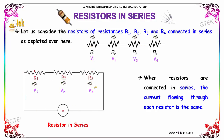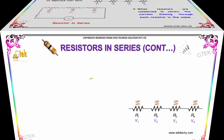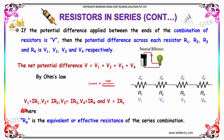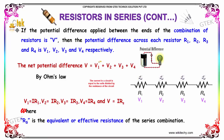When resistors are connected in series, the current flowing through each resistor is the same. Whereas the voltage will be different, which is considered as V1, V2, V3, and V4. The total voltage or potential difference V is equal to the sum of V1, V2, V3, and V4.